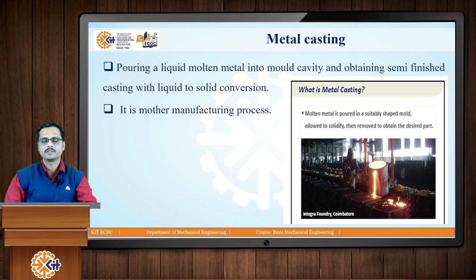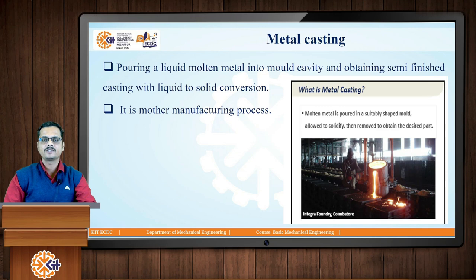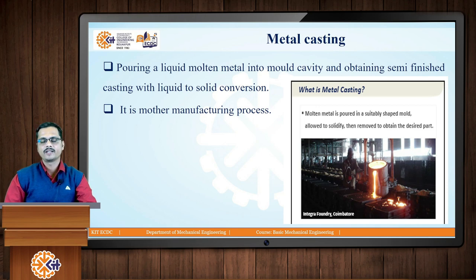As per this definition, in order to produce a casting we have to produce a cavity inside a mould. The size and shape of the cavity produced in the mould resembles the size, shape and dimensions of the casting which is to be produced. This mould cavity is then filled with liquid molten metal, and with the help of liquid to solid conversion we get the solid piece of metal known as a casting.